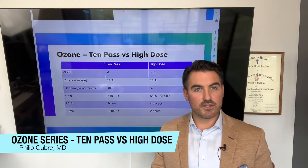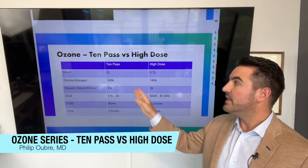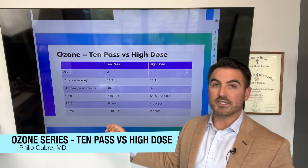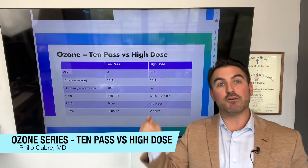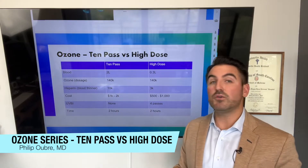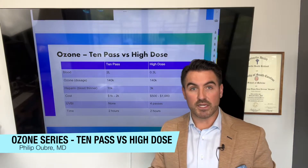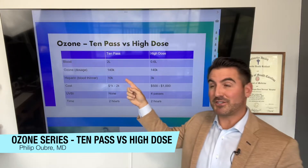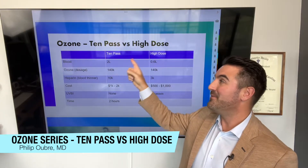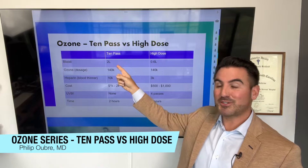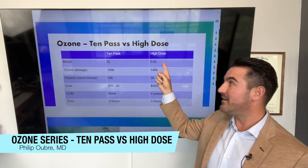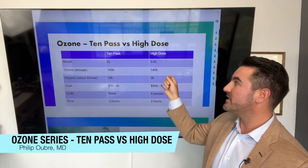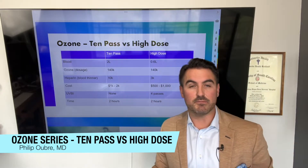The downside of the 10-pass, as we'll see in the chart, is that it uses more blood. Going through the chart: the 10-pass, because it has to take blood out 10 times, uses two liters of blood. The high-dose ozone uses less blood — 0.6 liters, or 600 milliliters, compared to 2,000 milliliters for the 10-pass.